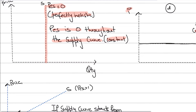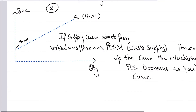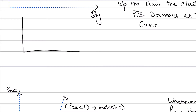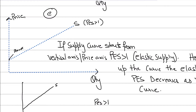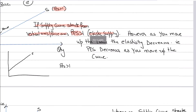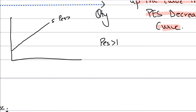Diagrams E and F are the important ones. In diagram E, if you're asked to draw an elastic supply curve — where PES is greater than 1 — it is drawn upward sloping starting from the vertical axis (price axis). The PES is greater than 1, indicating it is elastic. However, as you move up the curve, the elasticity decreases — PES decreases as you move up the curve. So the overall curve is elastic, but the value of the elasticity coefficient starts to decline.